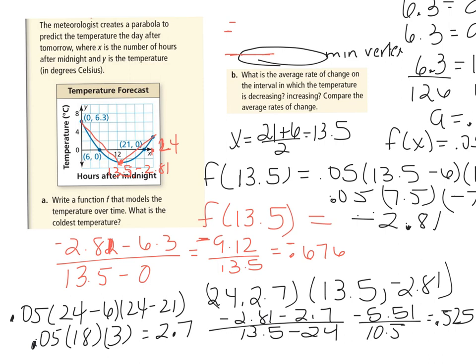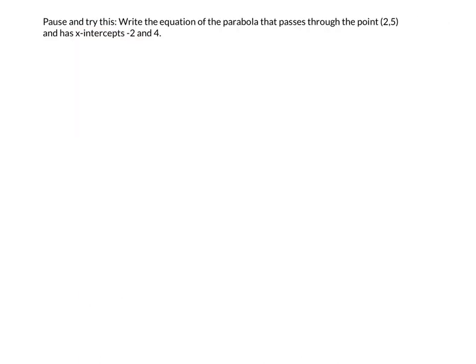Here's your problem — pause and try this. Write the equation of the parabola that passes through the point (2, 5) and has x-intercepts at negative 2 and 4. If you're given x-intercepts, we should be using intercept form. Pause before you watch this.